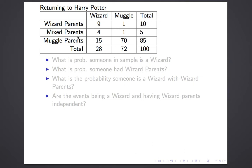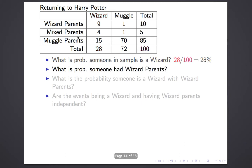We can see that second example if we go back to our Harry Potter example. Here's our table. The probability that someone in the sample is a wizard: take the number of wizards, which is 28, divided by the total, which is 100, and you get 28%. What's the probability someone has wizard parents? There are 10 wizard parents out of 100 people, so it's 10%.